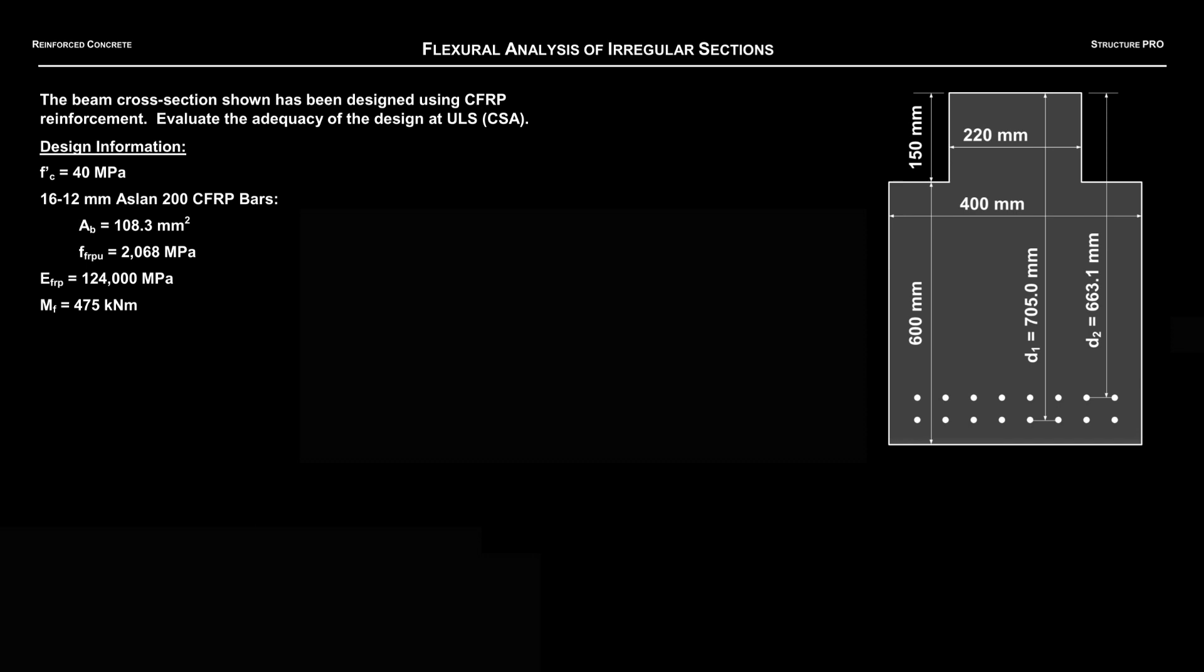We're asked to evaluate this cross section which has been designed using carbon fiber reinforced polymers at the ultimate limit state. We're going to use the Canadian Standards Association A23.3, the concrete code similar to ACI 318 for Americans. It's kind of a T-beam but the flange width BF is actually less than the web width BW. So it's definitely strange but we can do this. I have confidence.